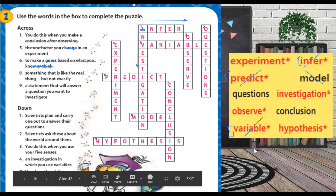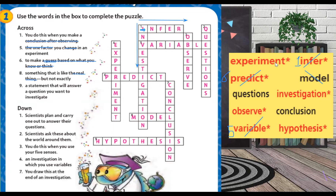Model is number eight. Do we write it? No, you just write the number — write number eight next to model.